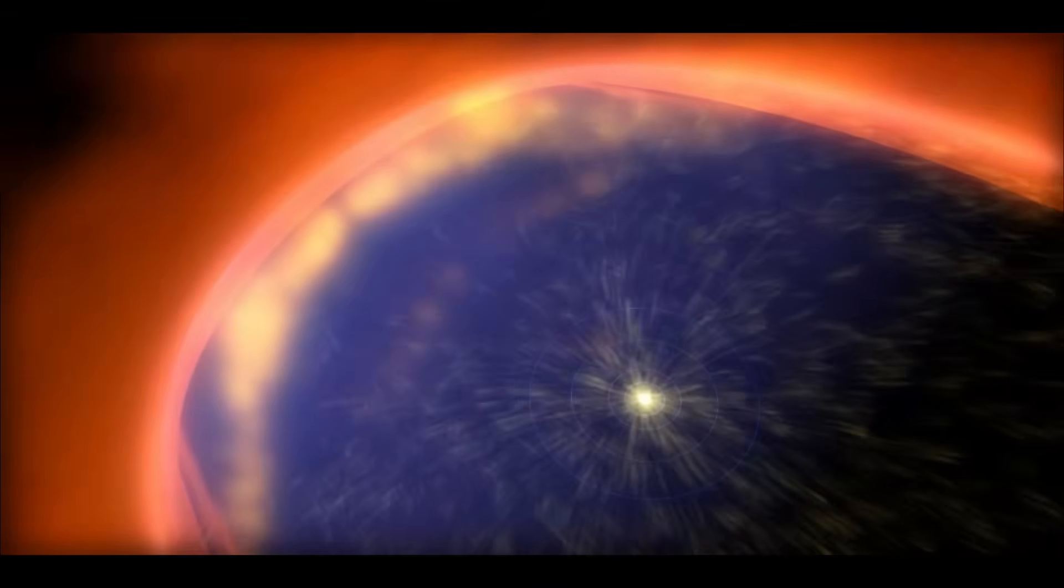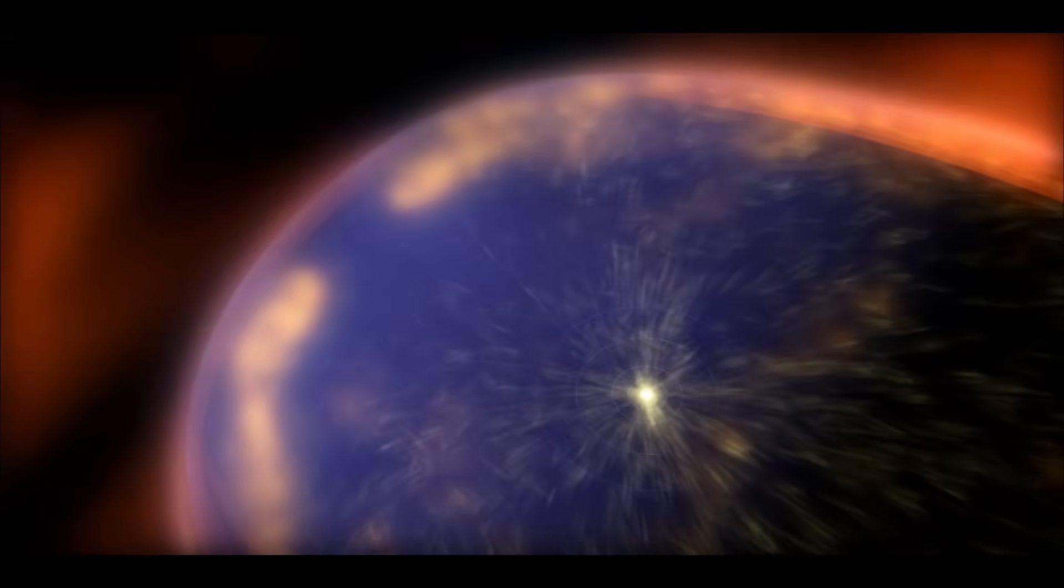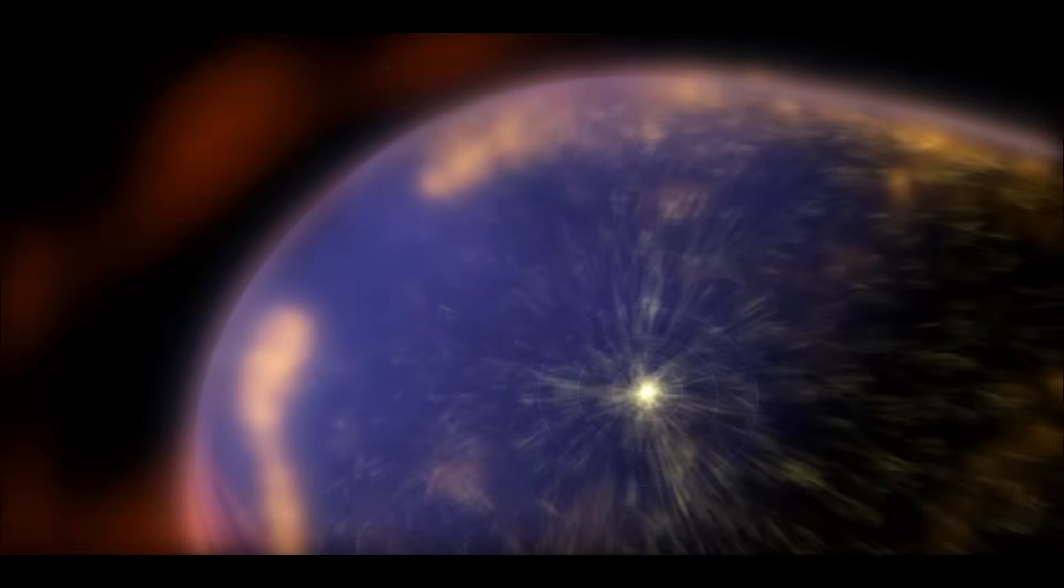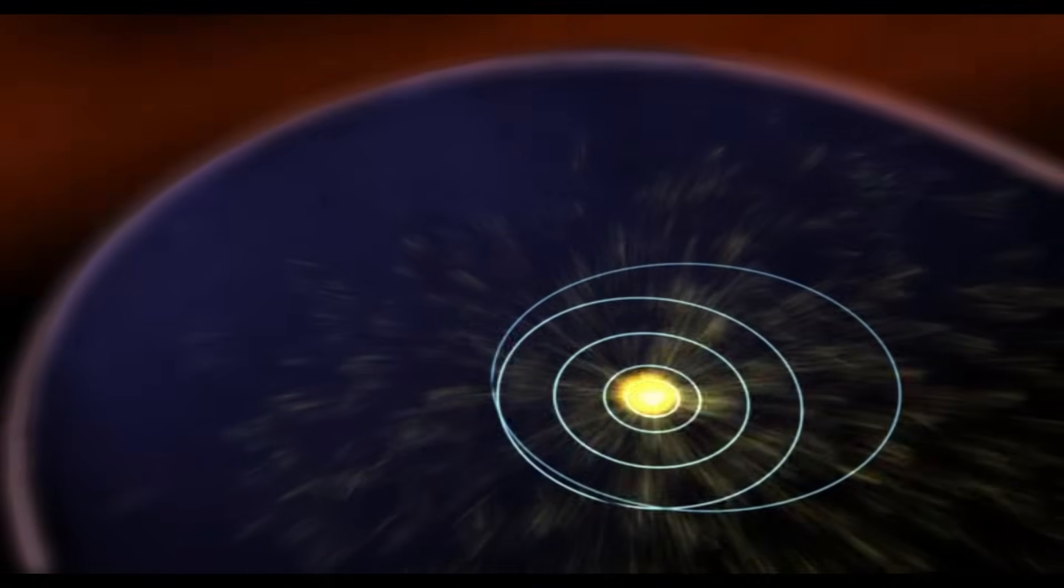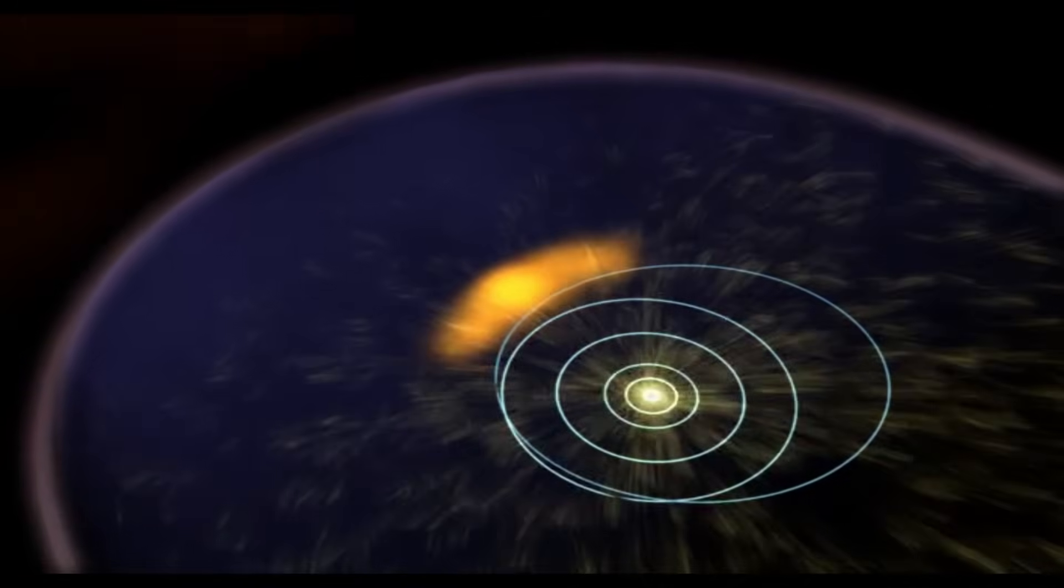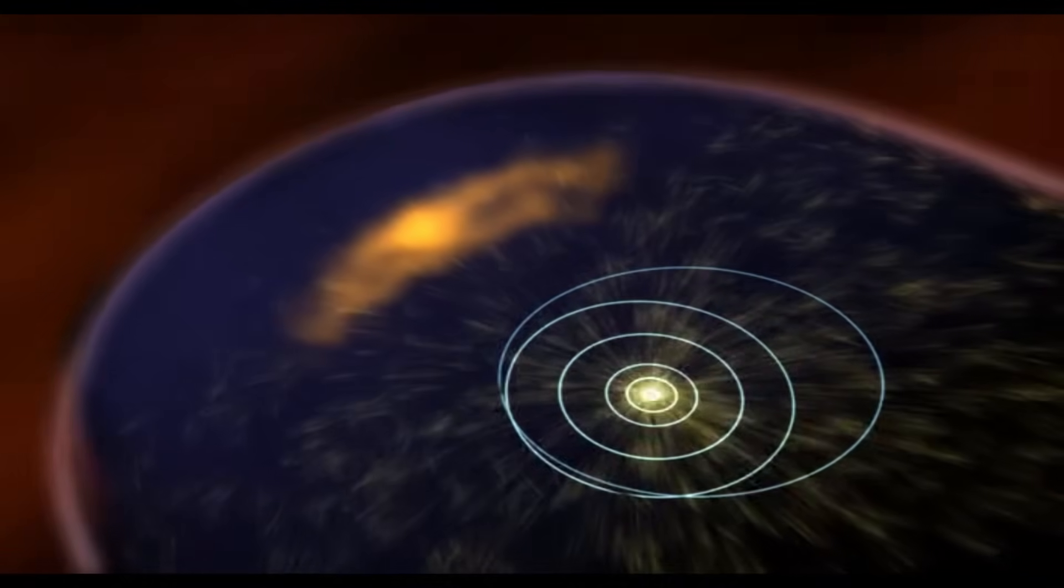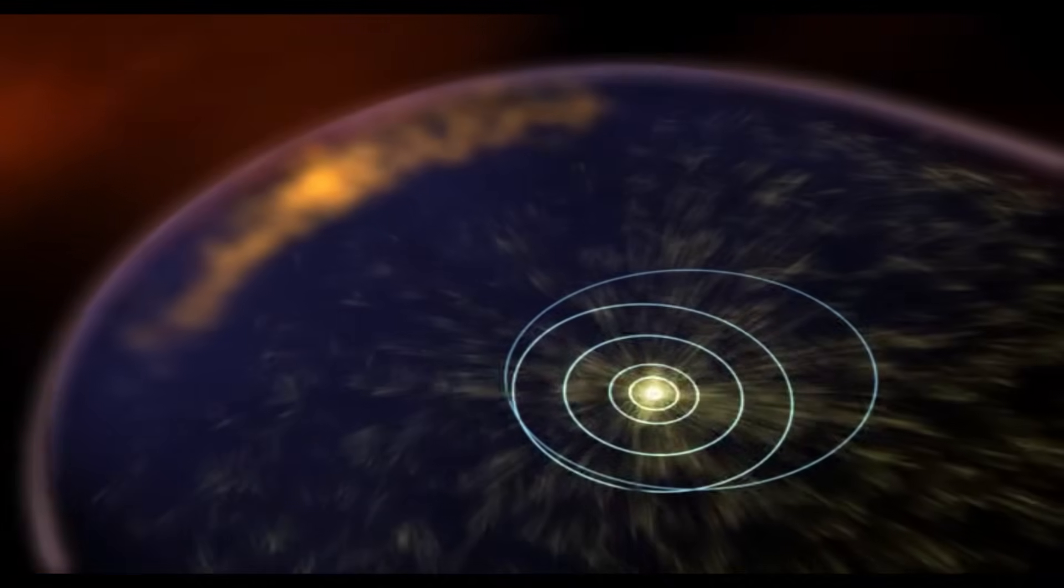This alignment suggests a deeper connection between our solar system and its surrounding galactic environment than we previously thought. One theory is that the Sun's magnetic influence extends much farther than previously believed, shaping the nearby interstellar medium. An alternative explanation is that the local interstellar cloud we are in already has an organized magnetic structure, and our solar system aligns with this structure.